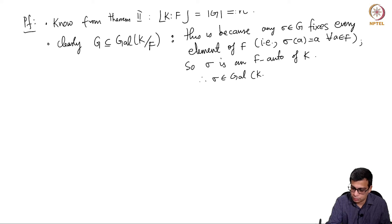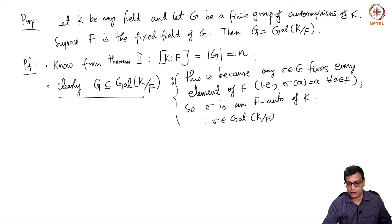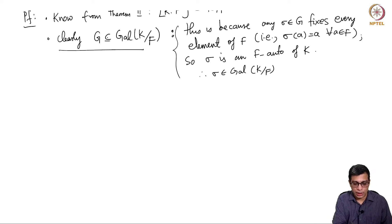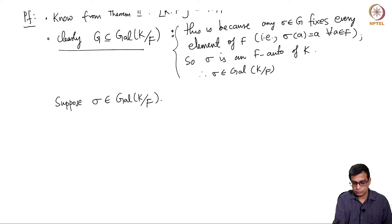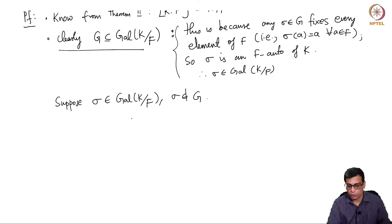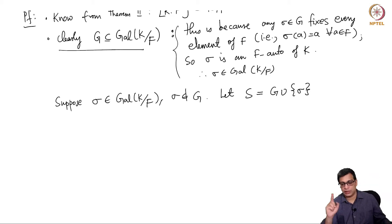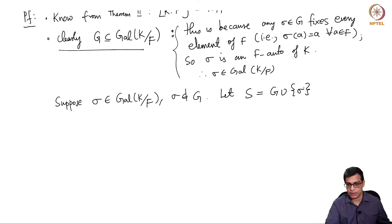So σ is in the Galois group. We have shown G ⊆ Gal(K/F); now we need to show the other inclusion. Suppose it is a strict inclusion — if possible, pick a σ which is in the Galois group but not in G, and let S = G ∪ {σ}. G is a group but G ∪ {σ} is of course not a group in general, so let us call it S.